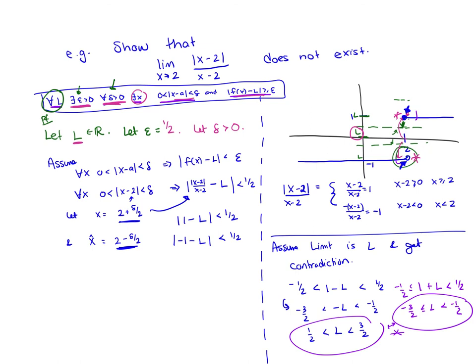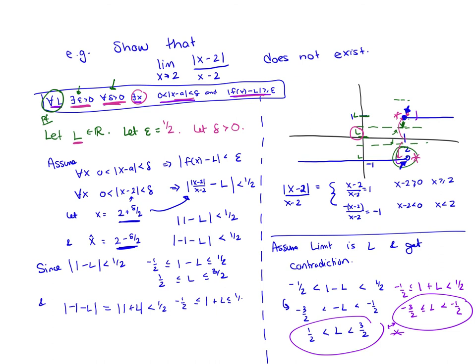Now we plug back into the formal proof. Since absolute value of 1 minus L is less than 1/2, we get L is between 1/2 and 3/2. And since absolute value of negative 1 minus L, which equals absolute value of 1 plus L, is less than 1/2, we get L is between negative 3/2 and negative 1/2. This gives our contradiction. So it was not the case that we had that limit, therefore the limit doesn't exist. We found a specific epsilon where we couldn't get that limit to exist independent of the value of L.